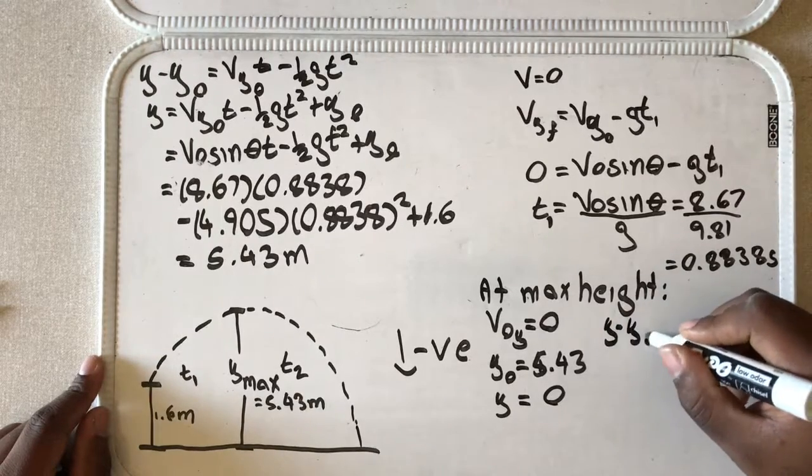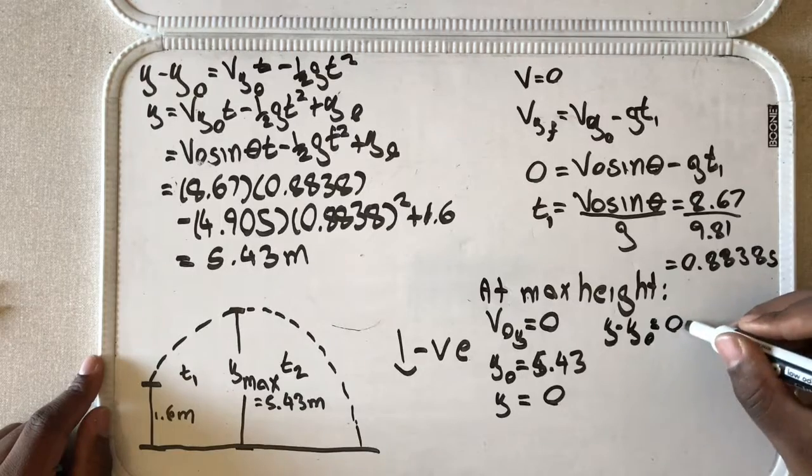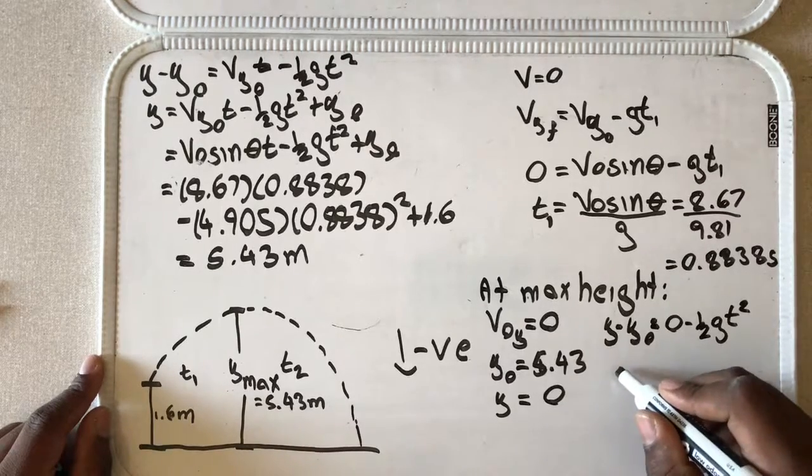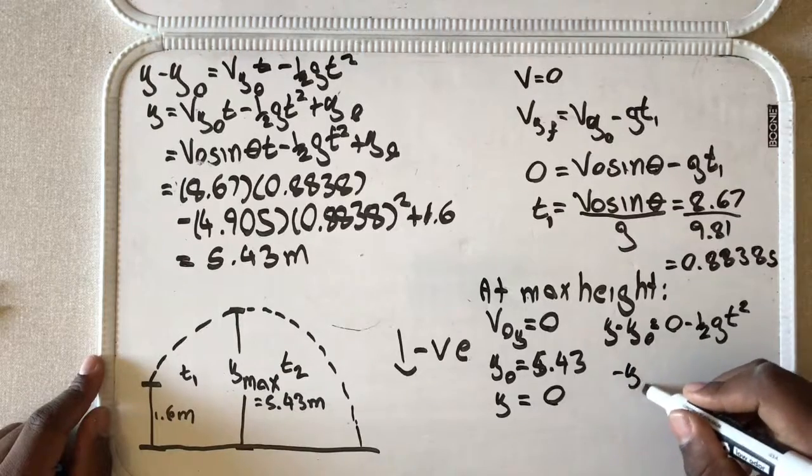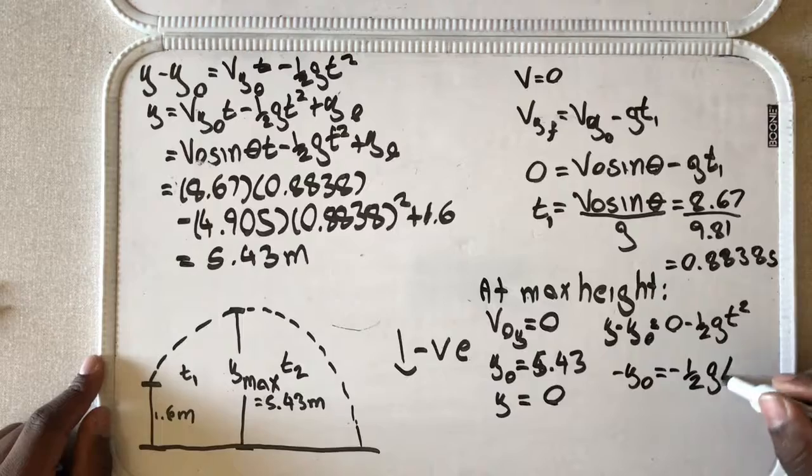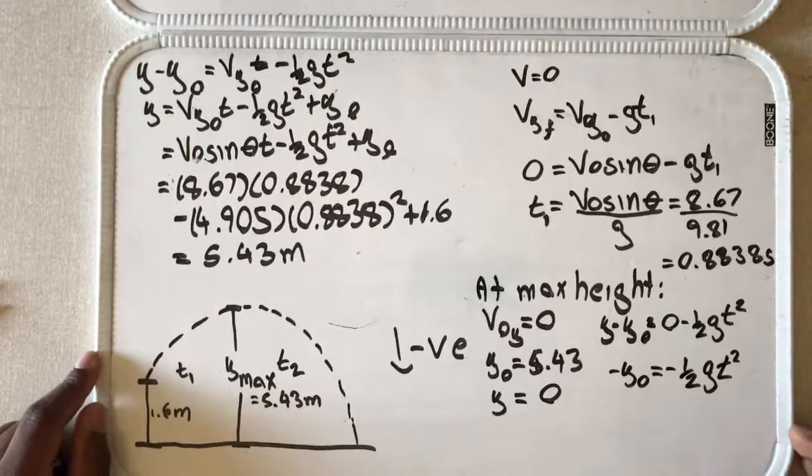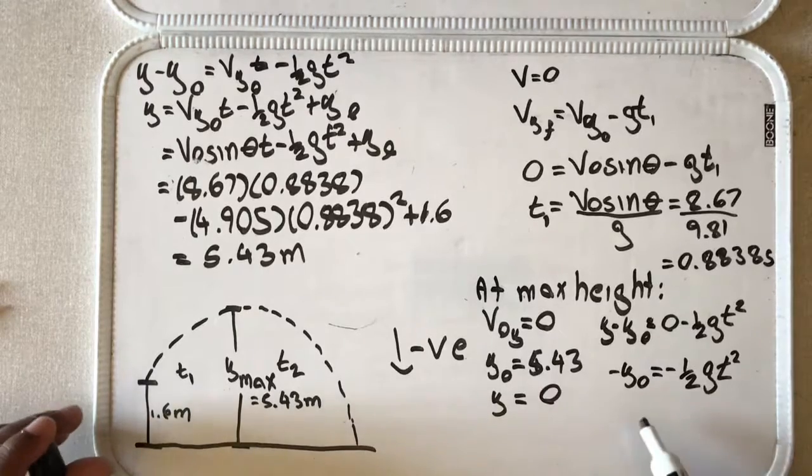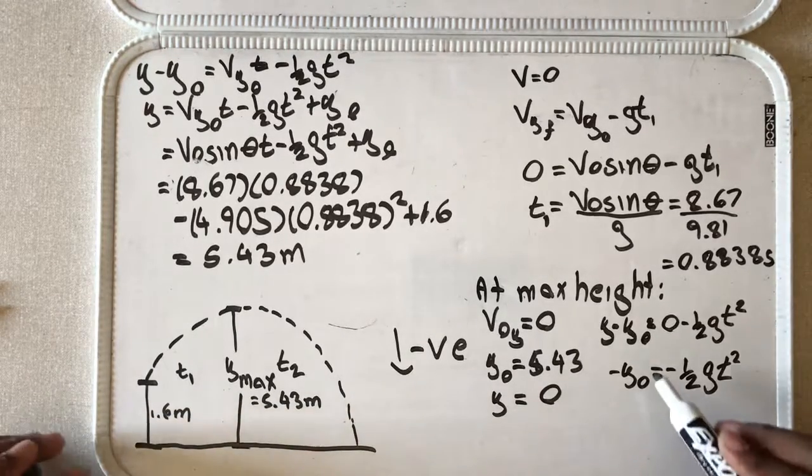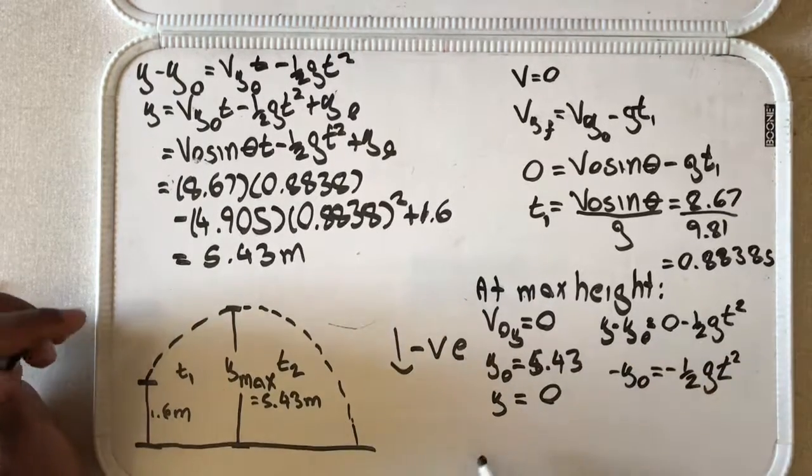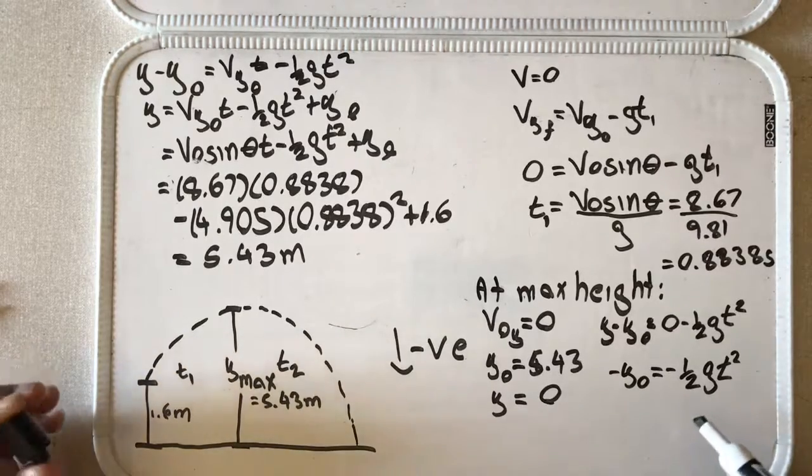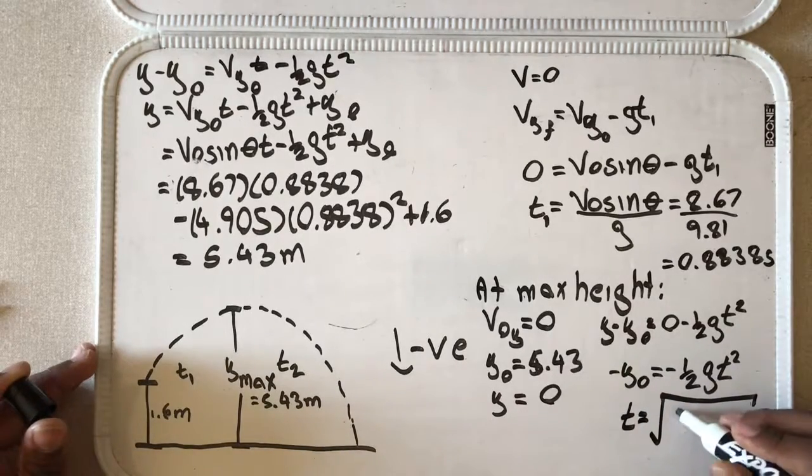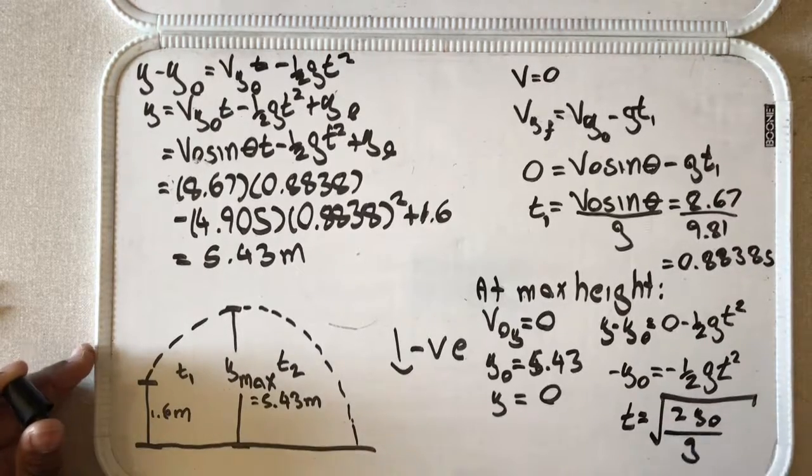So we can do some things here. So y minus y_0 is equal to 0 minus half g t squared. So our final height is 0, so we have negative y_0 is equal to negative half g t squared. If you've ever done any of these kinematic problems and you're solving for time or you have to square something but it's negative, go back and check your vectors because this object is going down. So our initial height is up here and our final height is down here. So it makes sense that we should have a negative here. And of course gravity is also going down, so these cancel and we end up with a positive.